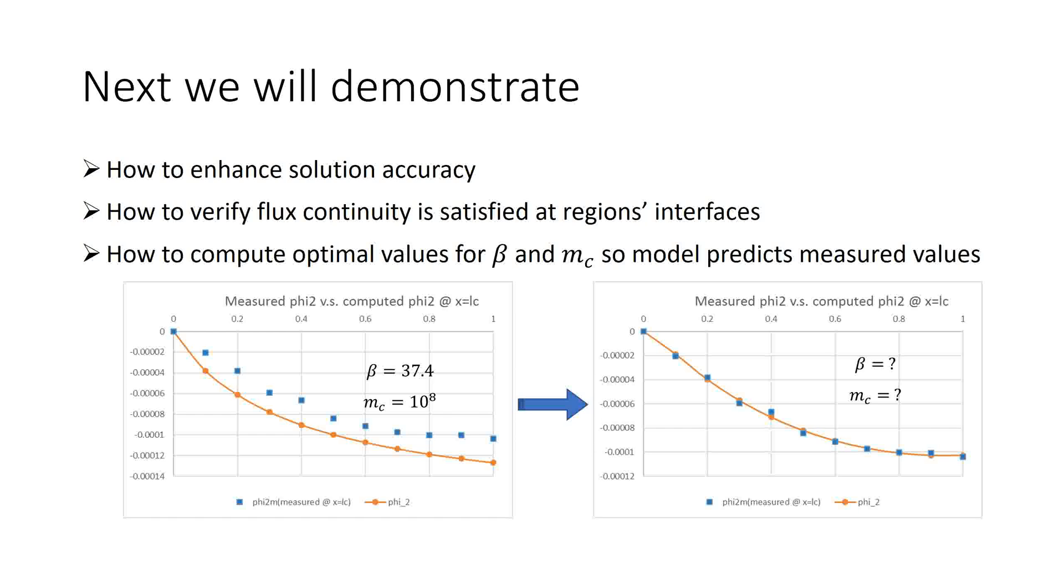In the third part of this presentation we will demonstrate more advanced features of PDESolve as well as the powerful three-step optimization process in XCLAB. The plot on the left shows the computed solution of phi 2 at x equal C and the actual measured values. Clearly our model with the default values for beta and MC does not do a good job matching the measured values. I will show how easy it is to find the optimal values for beta and MC to obtain the desired solution shown on the right.